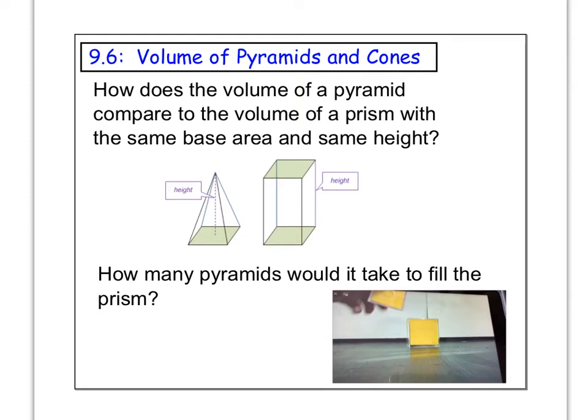So think about pyramids and cones. How do you think the volume of a pyramid compares with a volume of a prism that has the same base area? So imagine the base on this pyramid and the base on this prism, imagine those are the same size. And then also imagine that this height and this height are the same length as well. How many of these pyramids do you think it would take to fill up the prism?